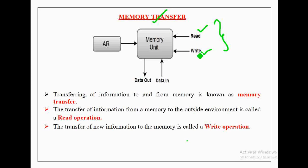In addition to these signals, the address of the data to be transferred is also very important for performing memory transfer operations. Without knowing the address of the data to be transferred, it is not possible to transfer the data. For this purpose, an address register is used, which specifies the address of the data to be transferred.